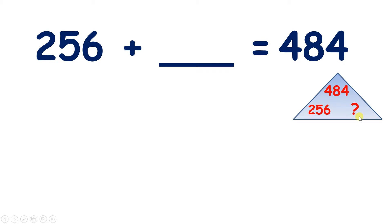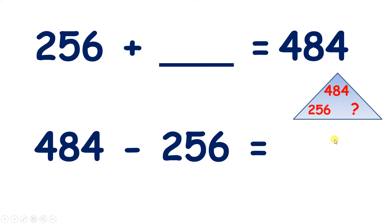So what do we need to do to find out what number the question mark represents? Well, with number family triangles, if we subtract a bottom number from a top number, we get the other bottom number. So we need to find 484 minus 256. Sometimes this is called using the inverse operation, because we're using subtraction to find a missing number in addition.